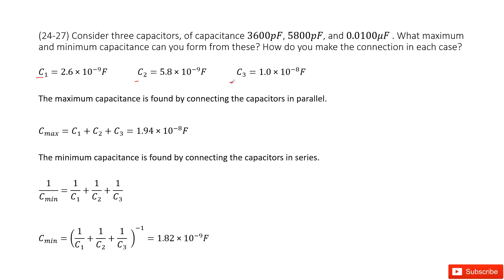For maximum capacitance, we can consider the parallel connection. Because for a parallel connection, the equivalent capacitance is C1 plus C2 plus C3. That is the maximum. So you input C1, C2, C3 and get the answer.